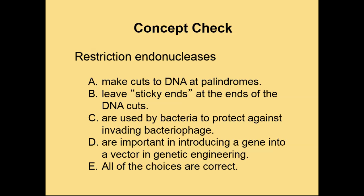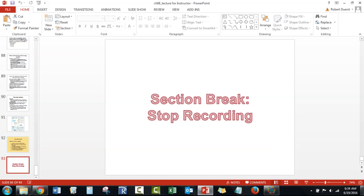So, that was a lot — normally that's several chapters depending on the textbook. Concept check, class: a restriction endonuclease is what? A, something that makes cuts to DNA at palindromes. B, something that leaves sticky ends at the ends of the DNA cuts. C, used by bacteria to protect against invading bacteriophage DNA. D, important for genetic engineering. Or E, all of the above are correct? This is a poorly written multiple choice question. Obviously, the answer is E — all of the above are correct. If you have any questions about this material, please shoot me an email or post them on the discussion board. Happy studies!